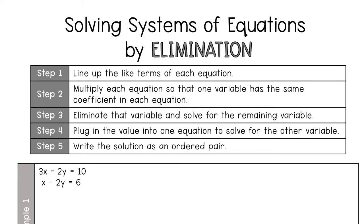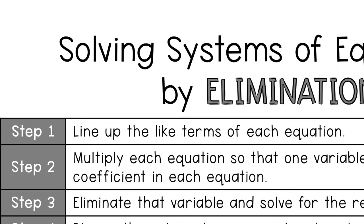So let's look at the steps. Step one is to line up the like terms of each equation. Remember, like terms means they have the same variable — so basically, line up the x's with the x's and the y's with the y's.